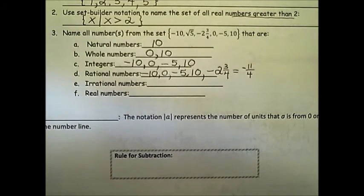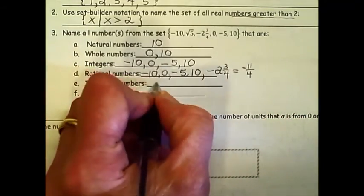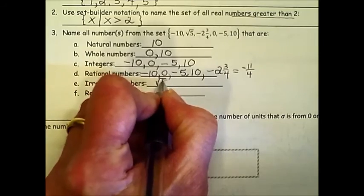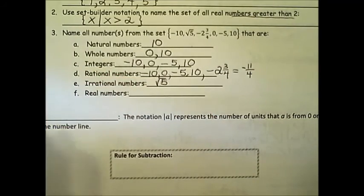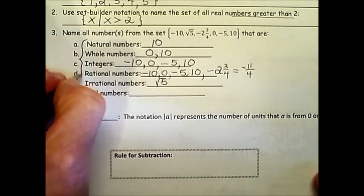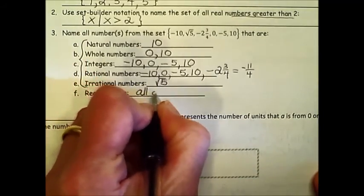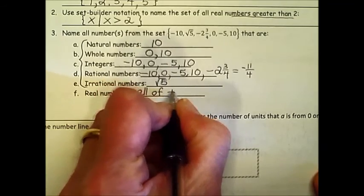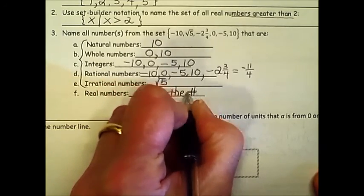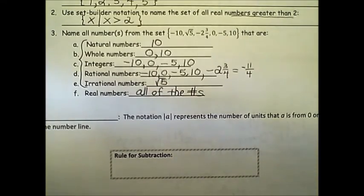Irrational numbers are numbers that do not repeat and do not terminate, and they're those special ones. It's the pi and the radical or square roots of numbers that we can't simplify to an integer answer, and the only special one that falls under that is the square root of 5. F asks for all real numbers, and since all real numbers are all of these, it will be all of the numbers. That is the end of section 1.1.